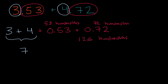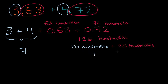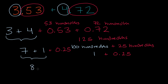How do we write 125 hundredths as a number? We can view this as 100 hundredths plus 25 hundredths. The reason I picked 100 hundredths is because 100 hundredths make a whole. So 100 hundredths is just one, and this becomes one plus 25 hundredths, or one plus 0.25. And remember, I'm adding that to the seven. So it's seven plus one plus 25 hundredths, which gives us eight and 25 hundredths, or 8.25.